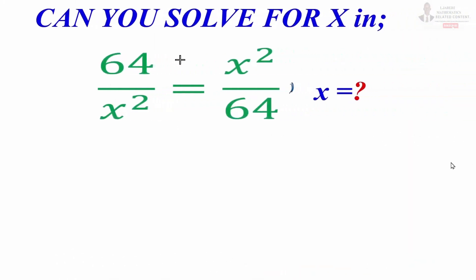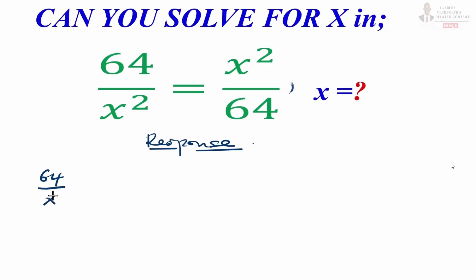The question is: can you solve for x in this expression? So let us look at the response. We have 64 divided by x squared equals x squared divided by 64. From this step, our first step should be cross multiplication. So we are going to cross multiply.